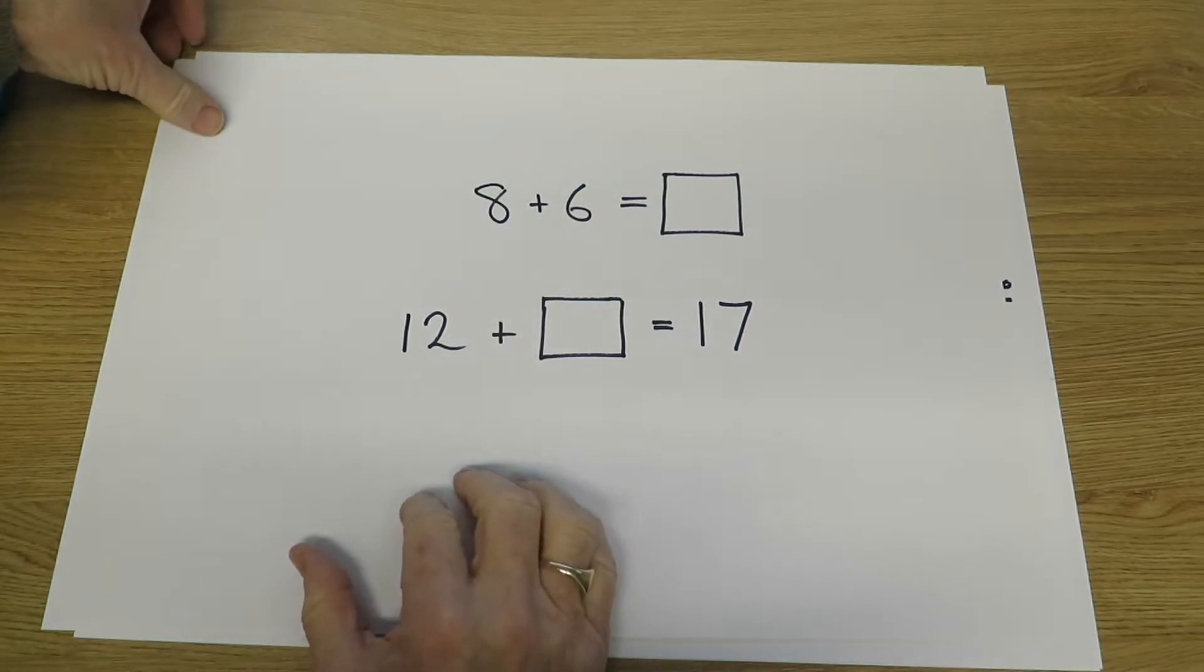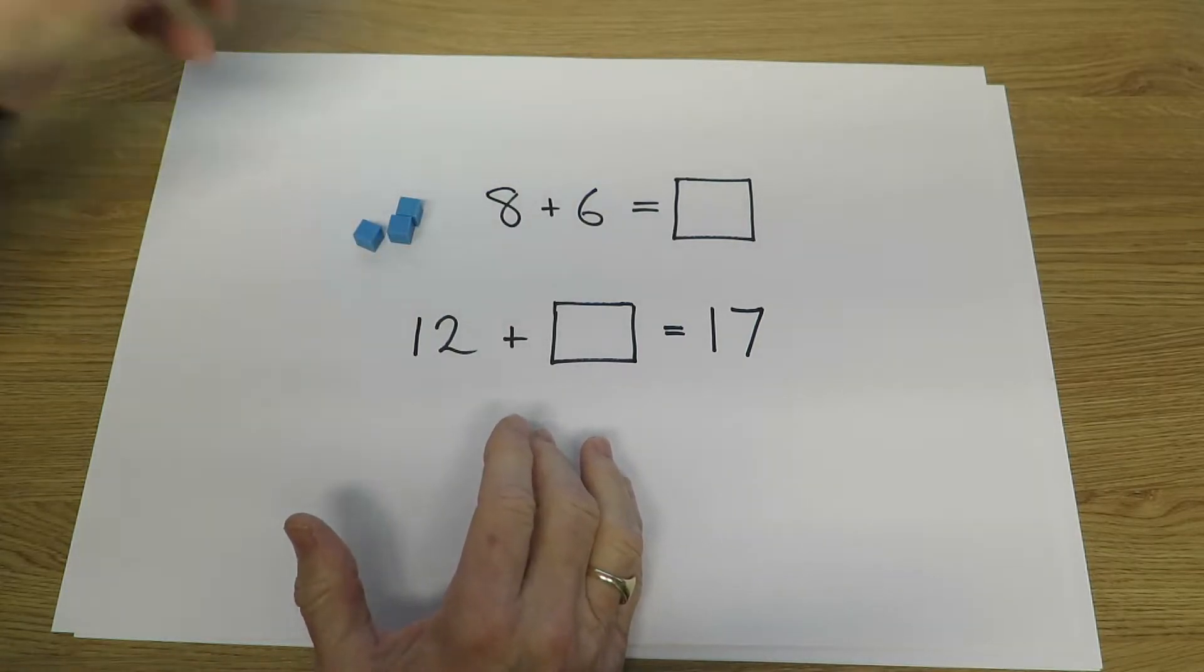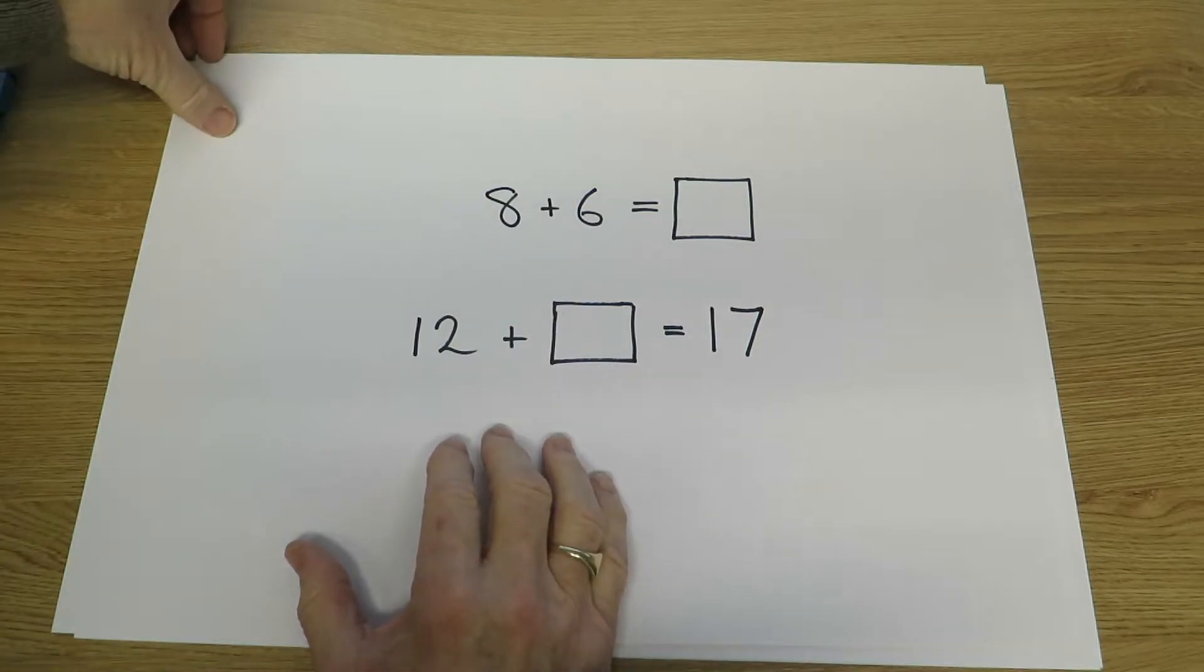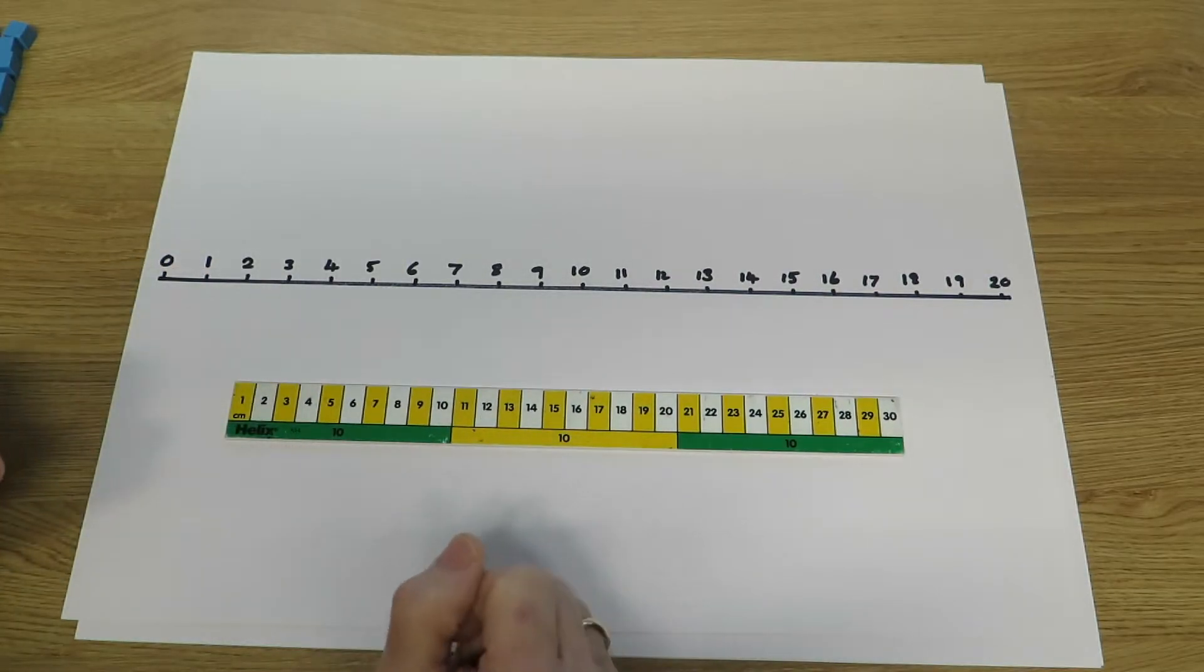To solve this sort of question they may still use their fingers or concrete objects such as units, or they may well use a number line or a number track such as a clearly marked ruler.